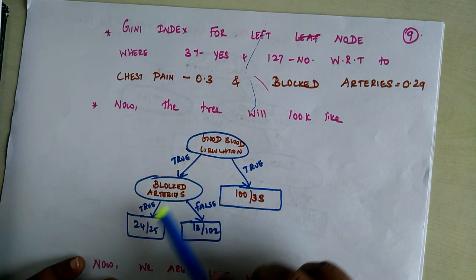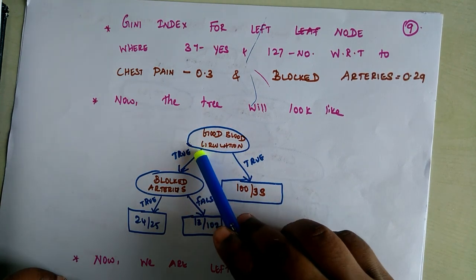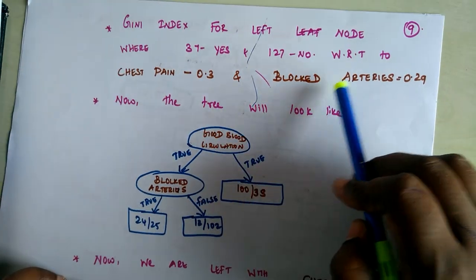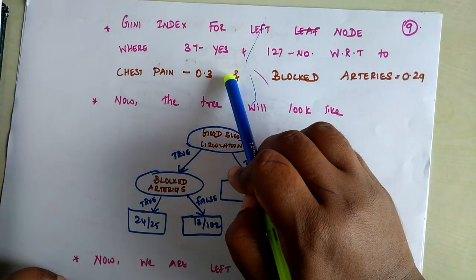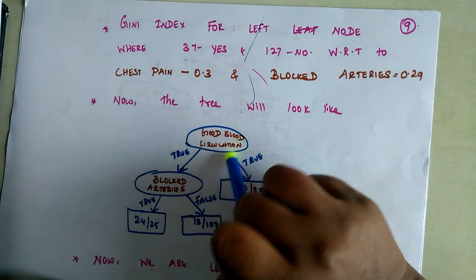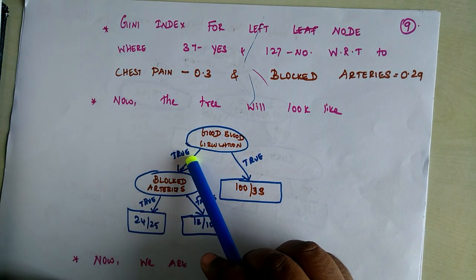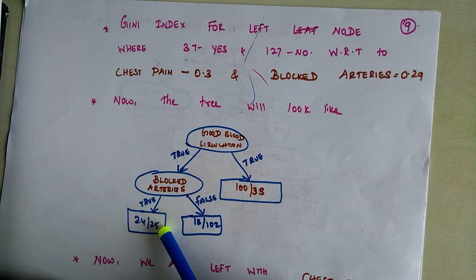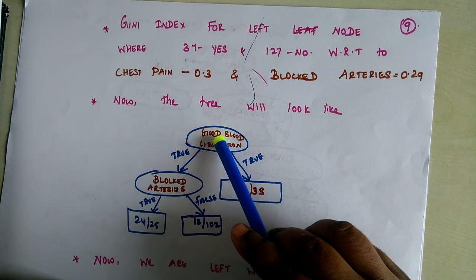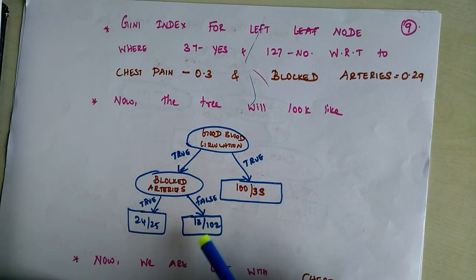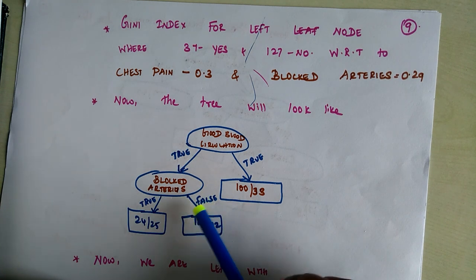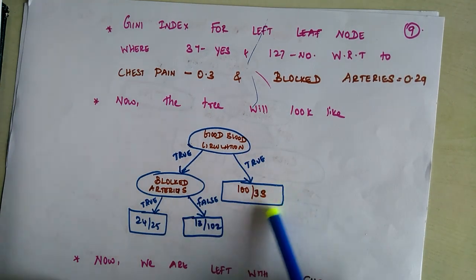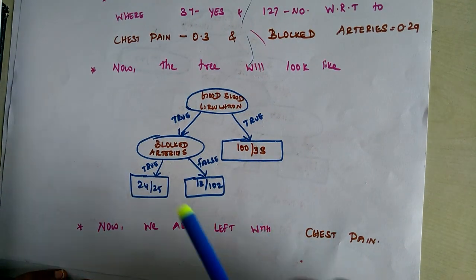Working on the left part of the tree first — patients with good blood circulation. For blocked arteries, the Gini index is 0.29, and for chest pain it is 0.3. So blocked arteries gets priority on the left branch. When a patient had good blood circulation and blocked arteries, 24 had heart disease and 25 did not. When they had good circulation but no blocked arteries, 13 had heart disease and only 2 did not.